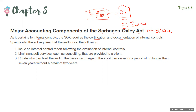The external auditors have to test internal controls. For example, they might slip in a fraudulent check and make sure that the company's internal controls catches that. So they're testing it to evaluate how it's performing.